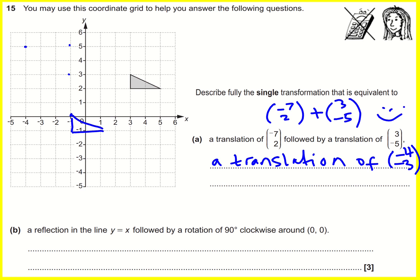Okay, second one. I think this is really tough without the grid, so let's use it. A reflection in the line Y equals X, followed by a rotation of 90 degrees clockwise around zero, zero. Now, personally, I cannot visualize where that's going to end up, so I'm going to use the grid. First thing I'm going to do is draw the line Y equals X, and that is the line that's perfectly diagonal.